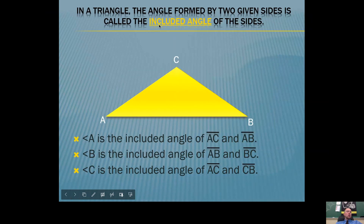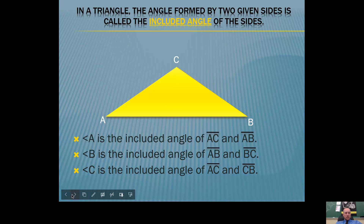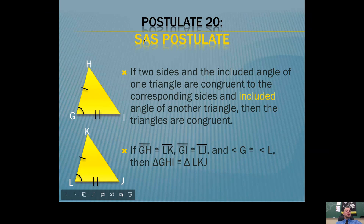Before we jump into that, we need to know what an included angle is. Angle A is the included angle of segments AC and AB. Angle A is included because it's where the two segments come together. So the included angle is really just the angle that's in between two certain segments. Clearly, angle B is the included angle between those two segments, and angle C is the included angle in another pair.